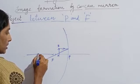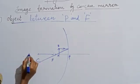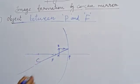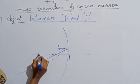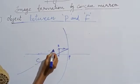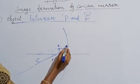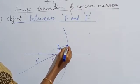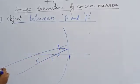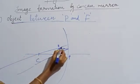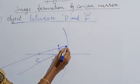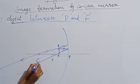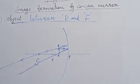Next ray we can select is one passing through the center of curvature C. The ray passing through the center of curvature again returns back through the same path. It is moving towards the mirror and returns back through the same path, so it will not intersect at this point.